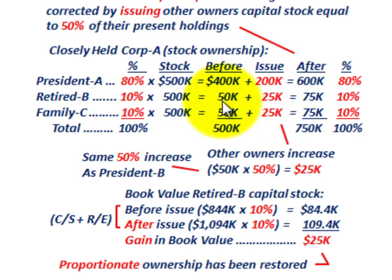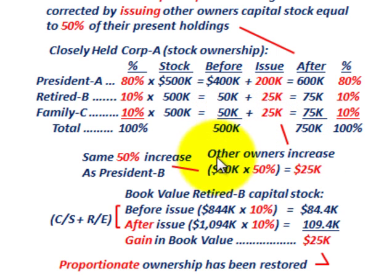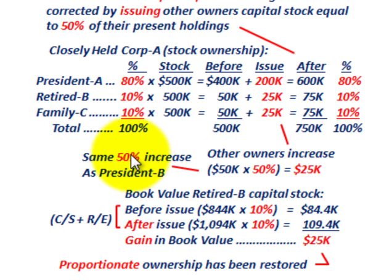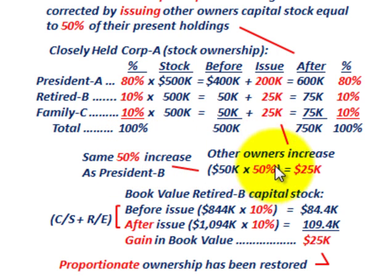With the preemptive rights, both retired stockholder B and family members C can each buy in at a 50% increase. They each had $50,000 in capital stock, so the 50% increase times $50,000 means the increase would be $25,000 each. This 50% is based on the fact that president A increased his stock ownership by 50%, so the same applies to the other owners.